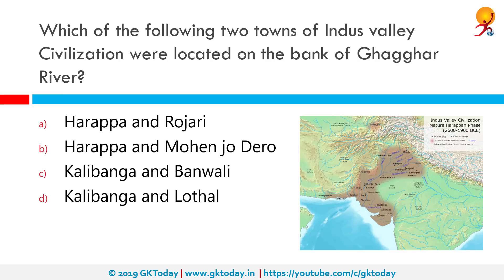Which of the following two towns of Indus Valley Civilization were located on the bank of the Ghaggar river? Correct answer is Kalibanga and Banwali. The Ghaggar-Hakra river is an intermittent endorheic river in India and Pakistan that flows only during the monsoon season.